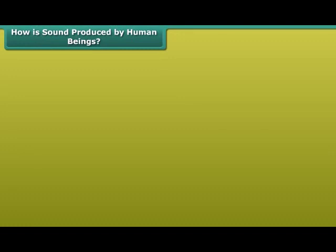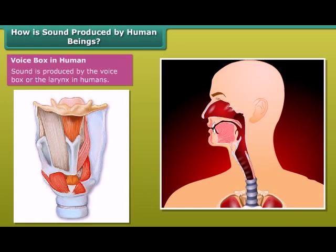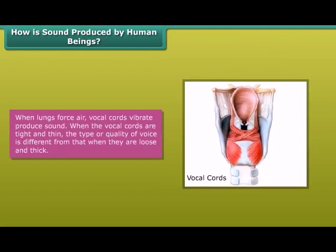How is sound produced by human beings? Sound is produced by the voice box or the larynx in humans. The part which moves when you swallow is known as the voice box, which is at the upper end of the windpipe. Two vocal cords are stretched across the voice box. When lungs force air, the vocal cords vibrate, producing sound. When the vocal cords are tight and thin, the type or quality of voice is different from when they are loose and thick.